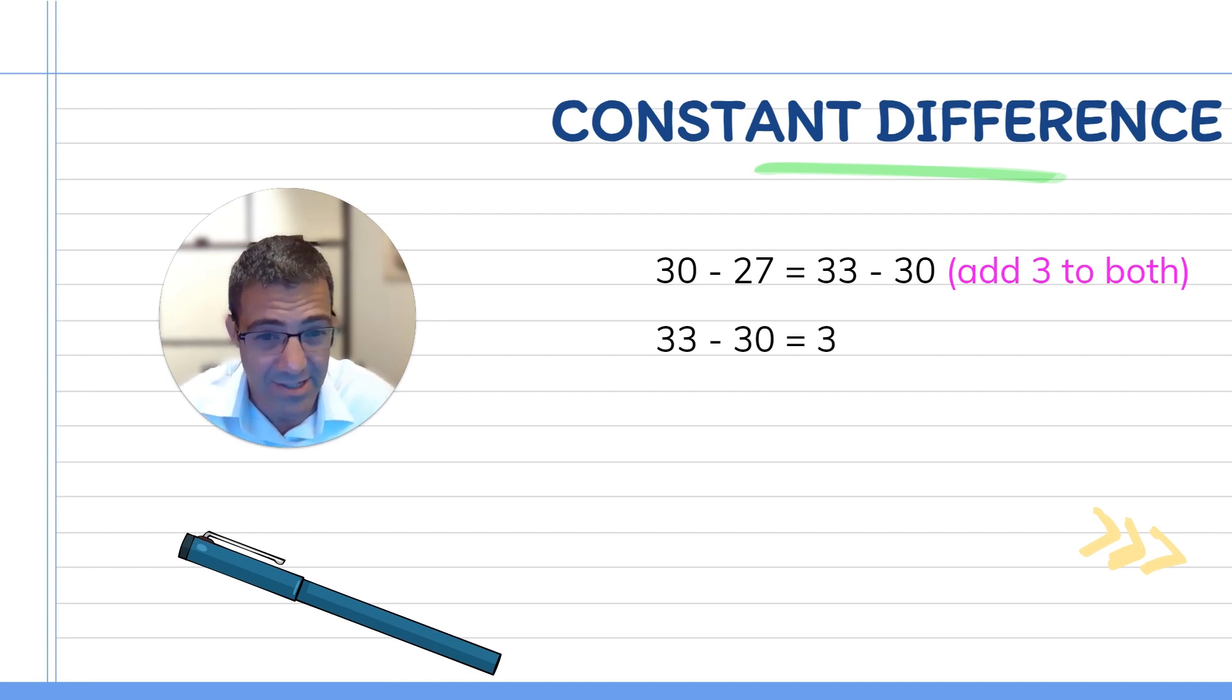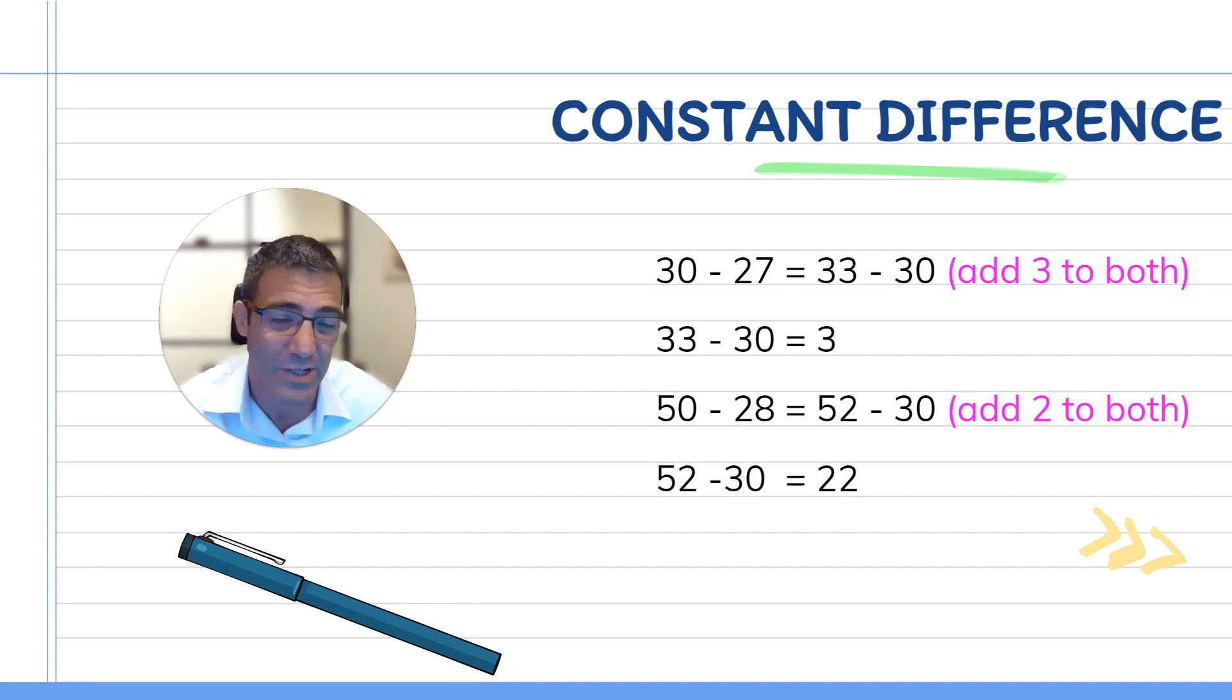You could look at something like 50 minus 28. If you're to add two to both of these numbers, you'd get 52 minus 30. And 52 minus 30 is a lot easier because all you have to do is five minus three in the tens, which is 22. So the constant difference is a little strategy that's often overlooked, but it's a very, very good strategy and something that works really well. So I would encourage you to look into that as well. It might be that this is the one that your child likes. So try it out.